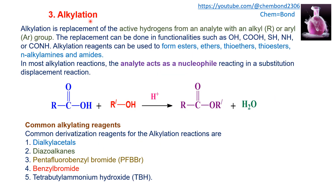The third type is alkylation. As the name indicates, an alkyl or aryl group is introduced in place of the active hydrogen. This replacement can be done in functionalities such as alcohol, carboxyl, thiol, amine, and amides. Alkylation reagents can be used to form esters, thioesters, ethers, thioethers, and alkyl amines and amides. In this reaction, the analyte acts as a nucleophile participating in an SN reaction. An example is the reaction of carboxylic acid with alcohol in acidic medium to produce an ester and water.